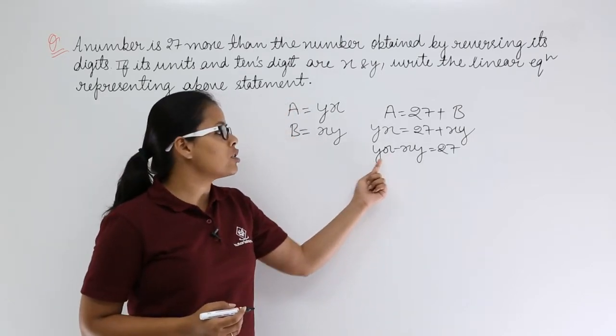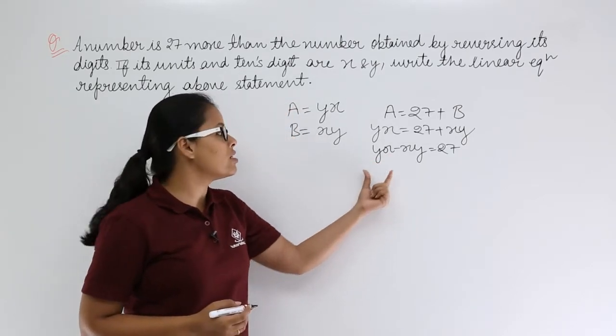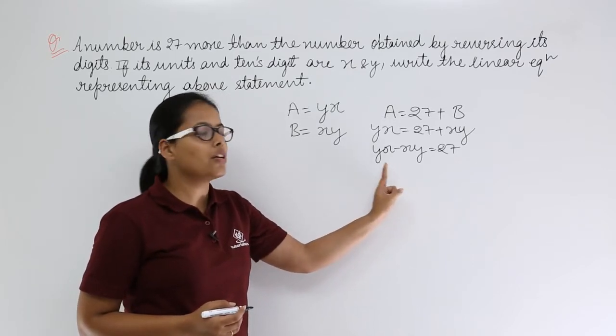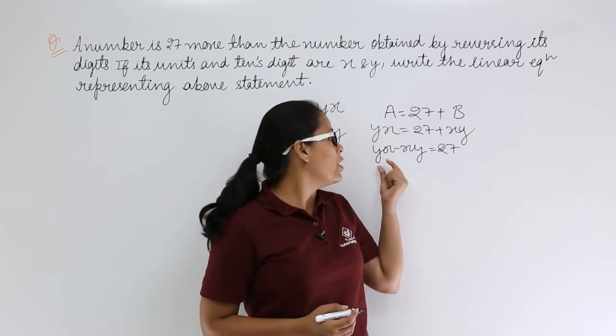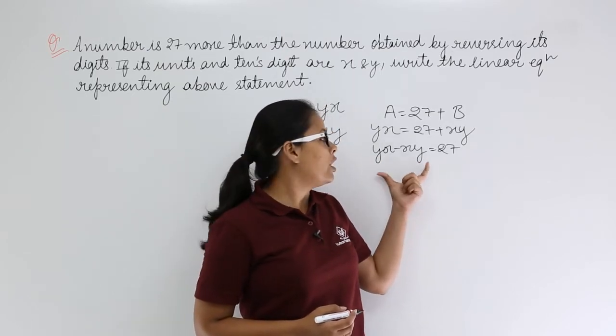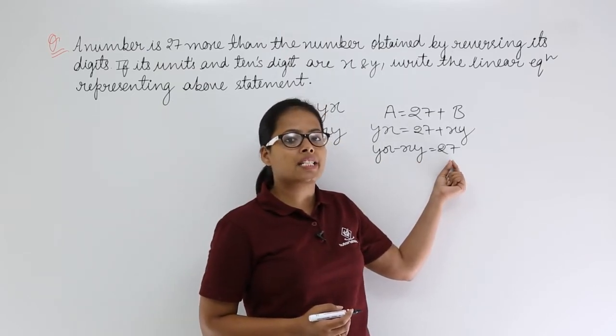Now you need to find a condition on x and y which will satisfy this equation always. You know that this is not the product of x and y. This is a number here where x is the unit place and y is tens place. Here in this again, this is also a number when you reverse A.